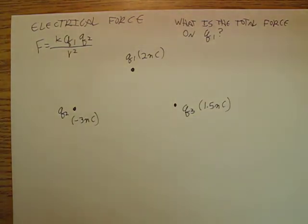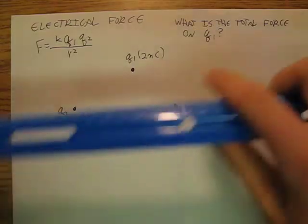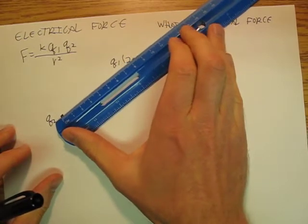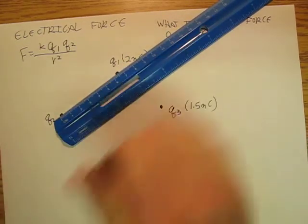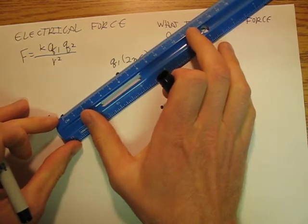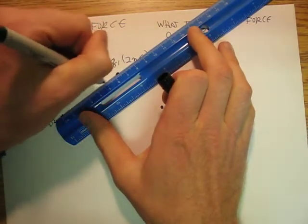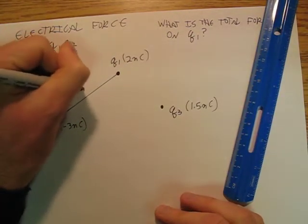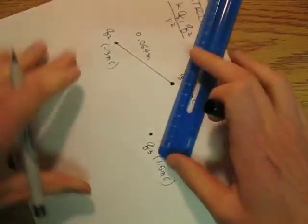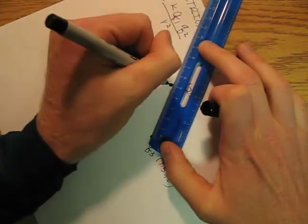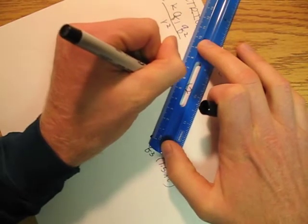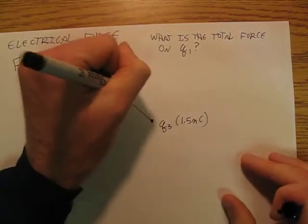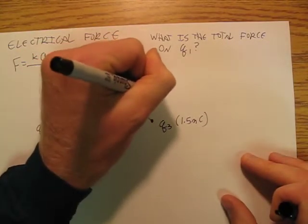Now, we're also going to need some distances. So I'm going to say this distance right here is 6.4 centimeters, so 0.064 meters. And this distance here is going to be 5 centimeters, so 0.050 meters.